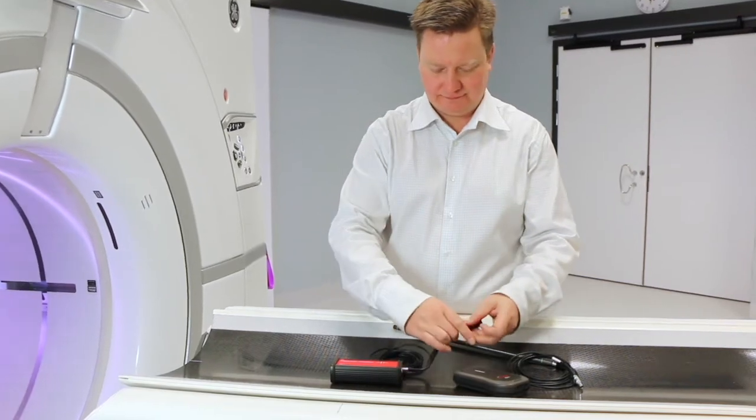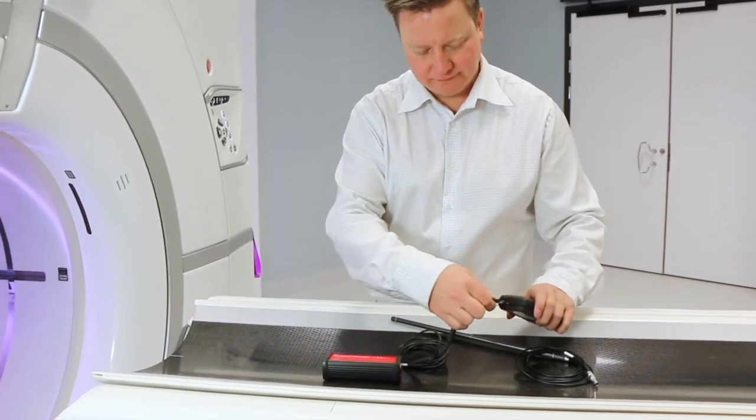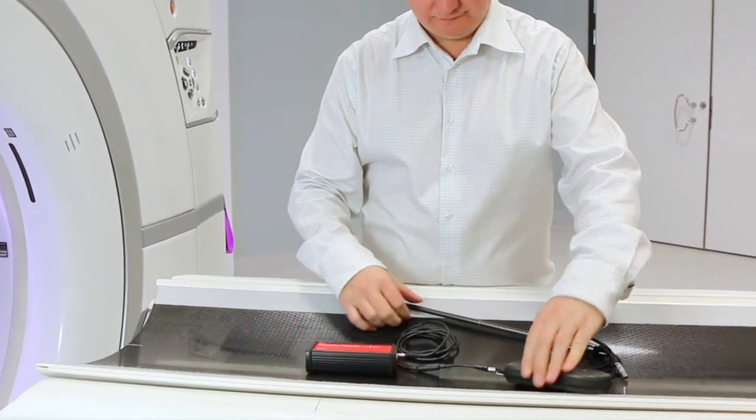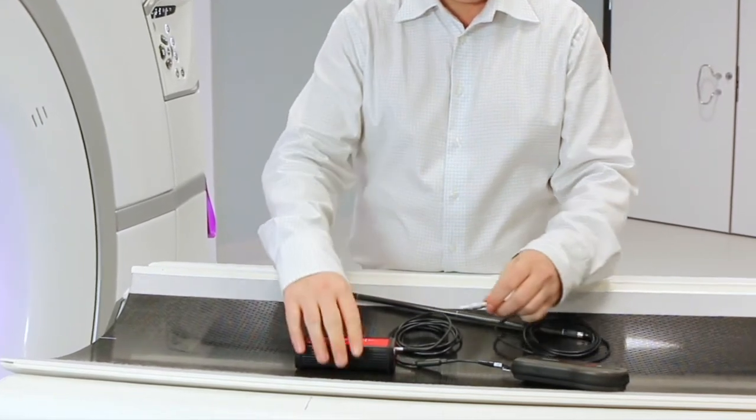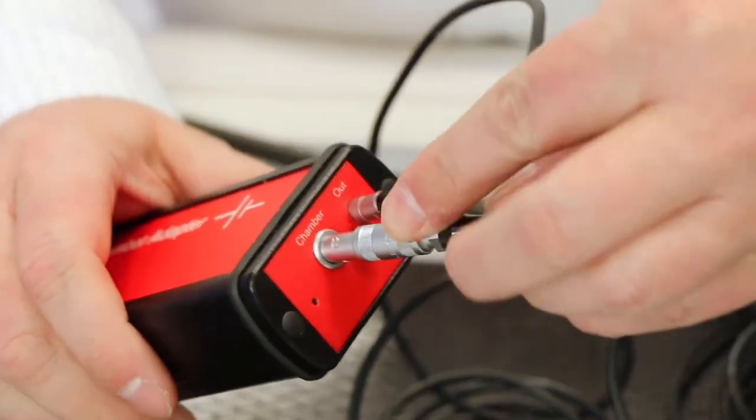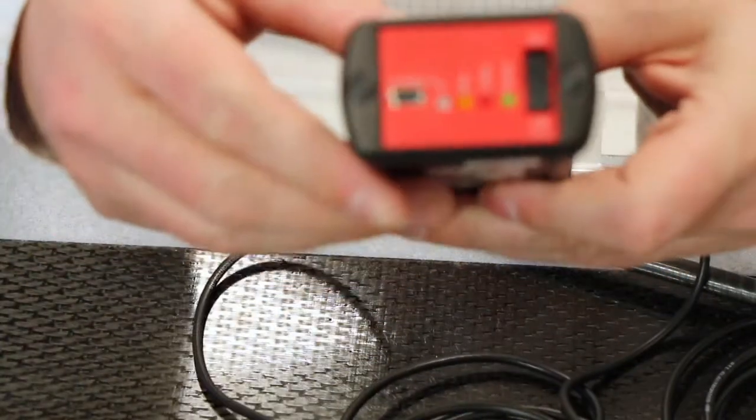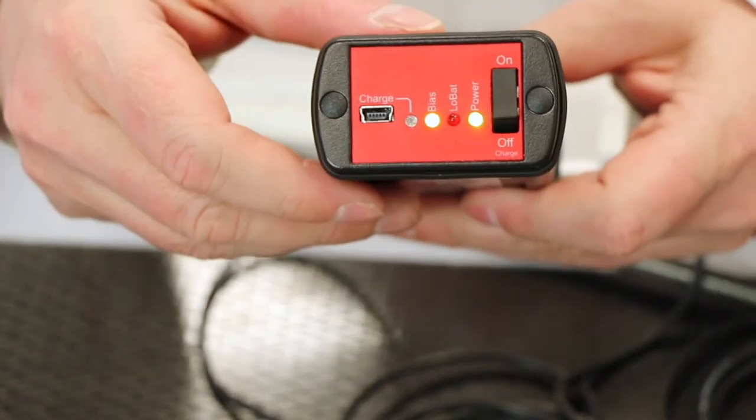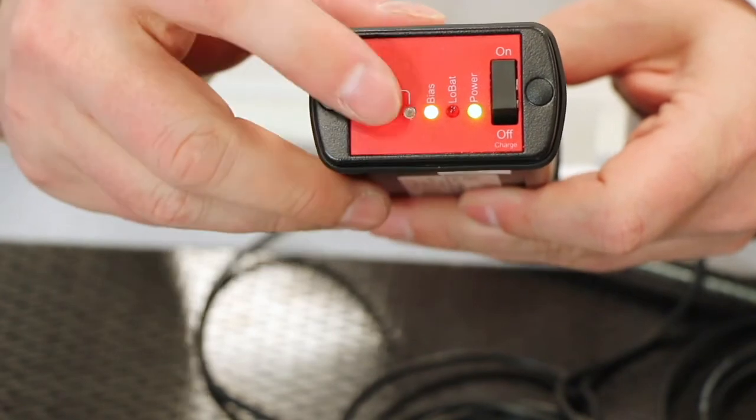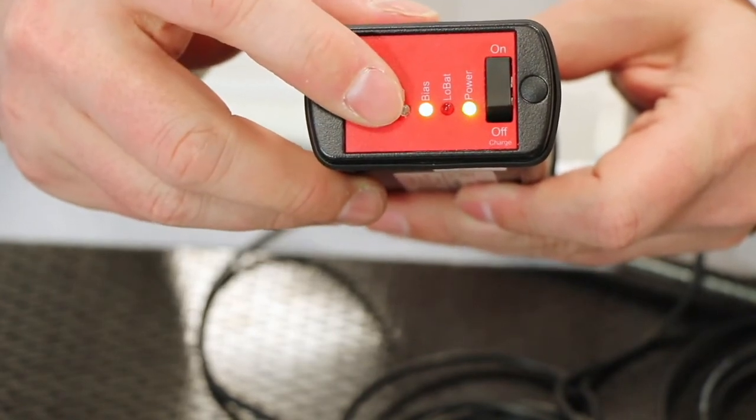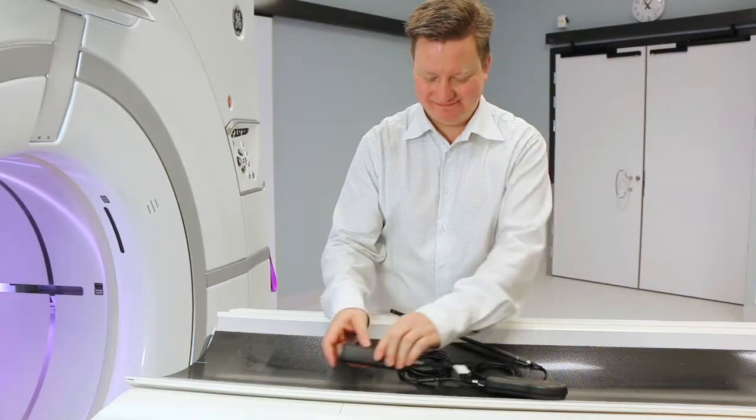To begin your first measurement, connect the chamber adapter to the piranha, plug in the CT ion chamber to the chamber adapter and switch on the chamber adapter. Note that the bias voltage will be active as long as the chamber adapter is on, therefore it is important to only connect or disconnect ion chambers with the chamber adapter switched off.